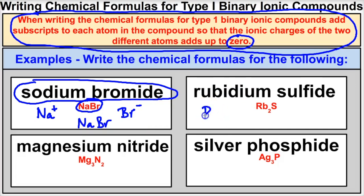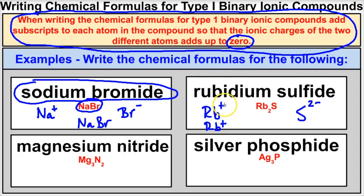If we take a look at rubidium — chemical symbol Rb — it forms positive 1 ions because it comes from group 1 on the periodic table. Sulfide comes from group 16 and forms negative 2 ions. Plus 1 and minus 2 do not add up to zero, but if we have another rubidium ion, plus 1 and plus 1 adds up to plus 2, which cancels out the negative 2 charge. We show two rubidiums by writing a subscript of 2, so the correct chemical formula is Rb₂S.